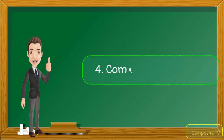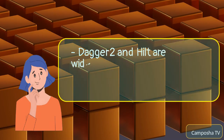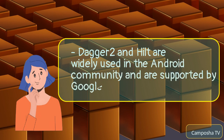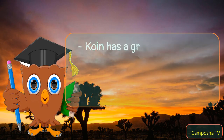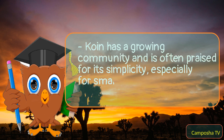Community and support: Dagger2 and Hilt are widely used in the Android community and are supported by Google. Koin has a growing community and is often praised for its simplicity, especially for small to medium-sized projects.